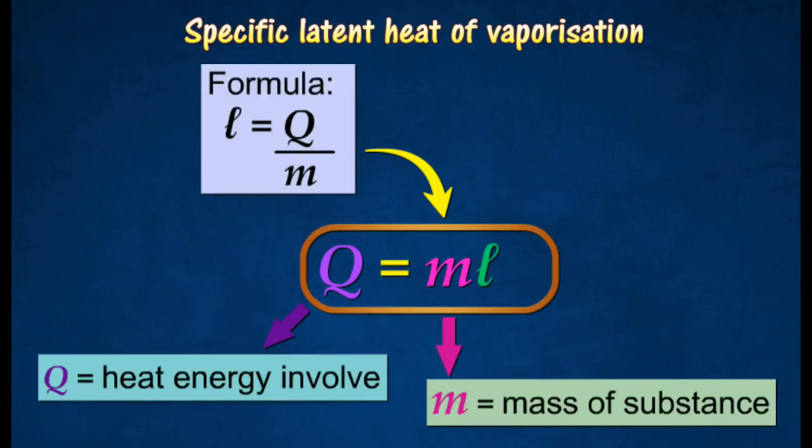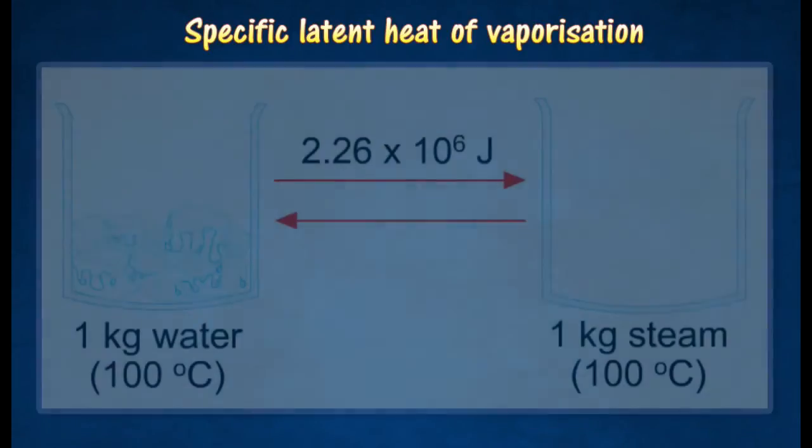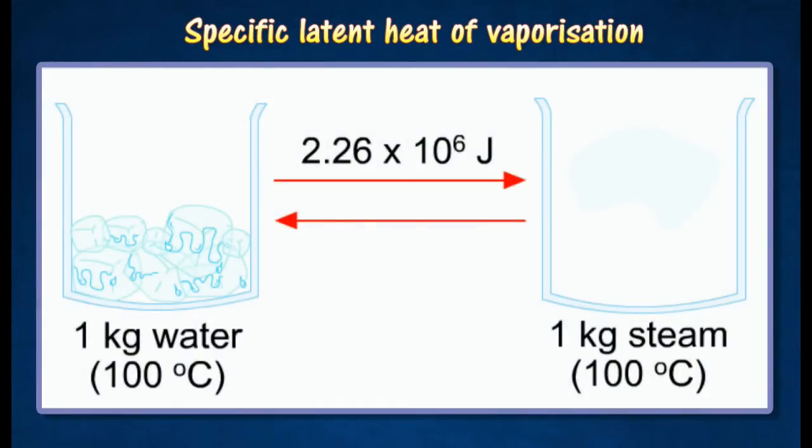The quantity of heat q needed to change m kg of a substance from the liquid to vapor state. In this example, 2.26 times 10 to the power of 6 joules of heat is needed to change 1 kg of water into steam at a constant temperature of 100 degrees Celsius.